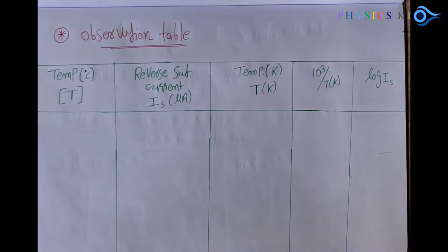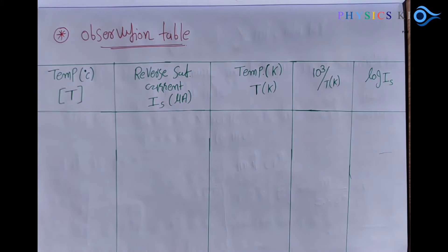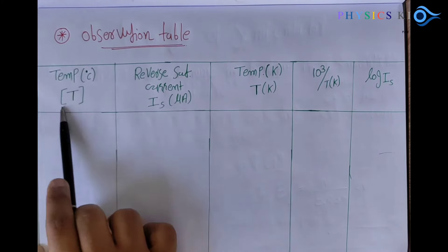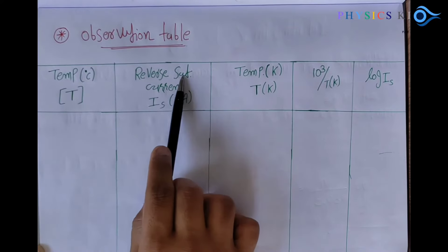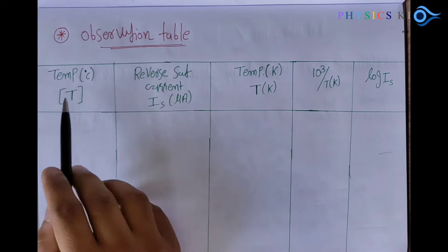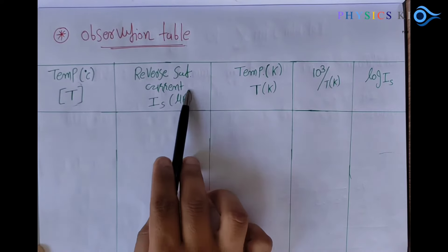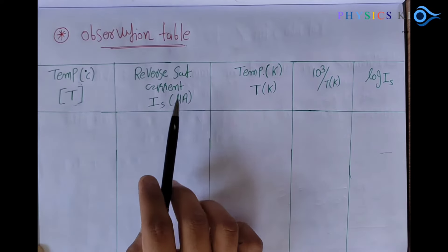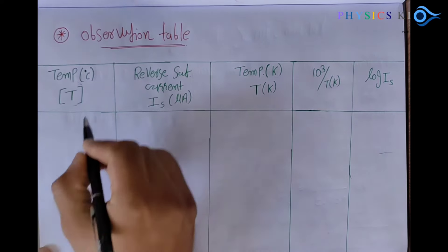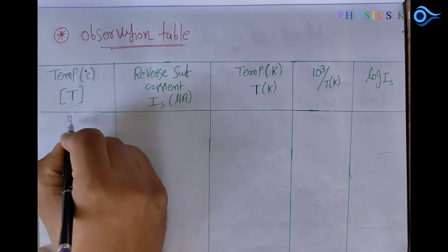Let's go through the data table. The first column is temperature in Celsius, and the second column is the reverse saturation current, which is the current through the diode. We have to measure temperature and the corresponding reverse saturation current.